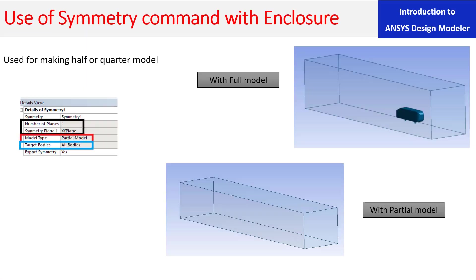Now let's look at what options we have in the symmetry command. Number one is 'number of planes' — we can choose up to three planes. We can also use multiple symmetry commands if there are limitations. For symmetry plane one, we can choose any plane such as the XZ plane. The model type has two options: partial and full model. With a full model it gives you one half, and with a partial model it gives you the other half. So depending on which side of the symmetry plane your geometry lies, you choose accordingly.